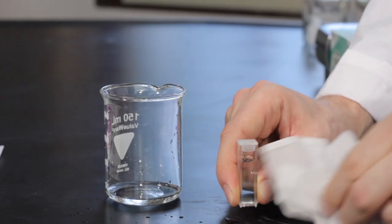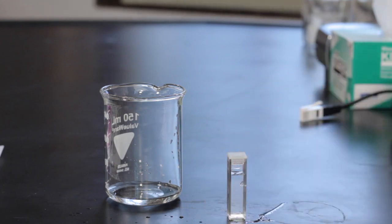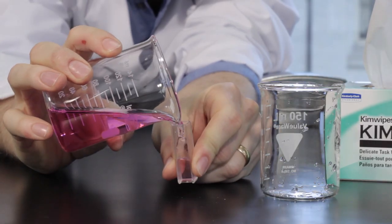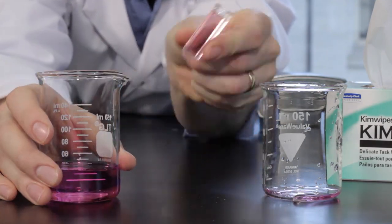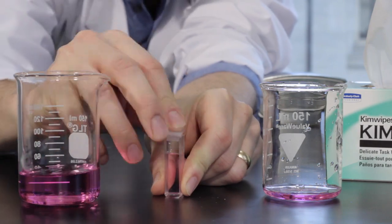Fill one of the cuvettes with distilled water and cap it. This will be the reference solution. Rinse the other cuvette with solution 5, 2 times. Discard the rinsates and fill the rinsed cuvette with the solution. Then cap it.